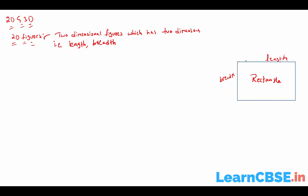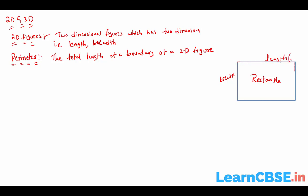In two-dimensional figures we have perimeter. Perimeter means the total length of the boundary of a two-dimensional figure. For a rectangle, the total length is L + B + L + B, that means 2L + 2B, or taking 2 common: 2(L + B). So this is the perimeter of a rectangle.